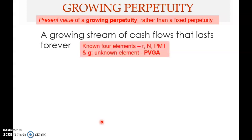We are now going to look at the fourth variant of annuity. The four variants are: ordinary annuity, annuity due, growing annuity, and the fourth one — growing perpetuity.